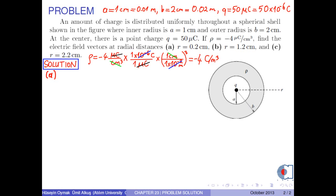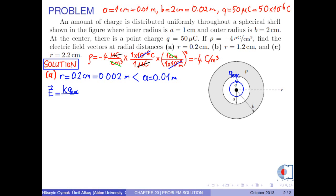In part A, R equals 0.2 cm, which is 0.002 m in SI units. We see that it is less than the inner radius A equal to 1 cm. Therefore, we draw the Gaussian sphere inside the inner sphere. The total charge enclosed by this Gaussian sphere is Q. Therefore, the electric field is calculated by the formula K times Q enclosed over R squared R-hat, where R-hat is the radial direction. Since Q enclosed is Q, we have K times Q over R squared R-hat.